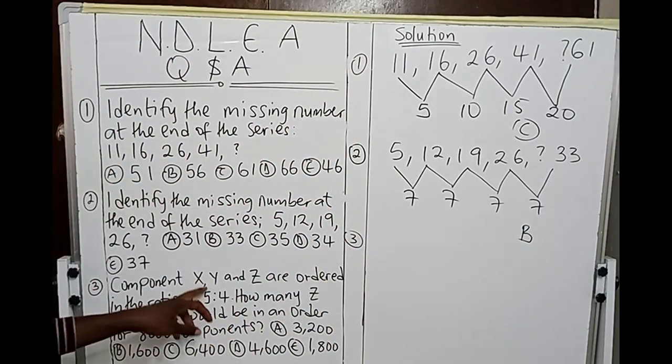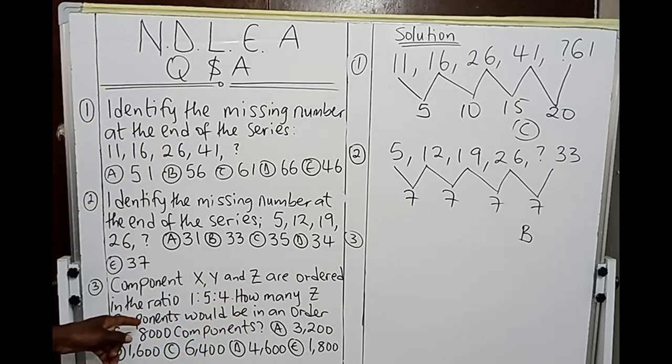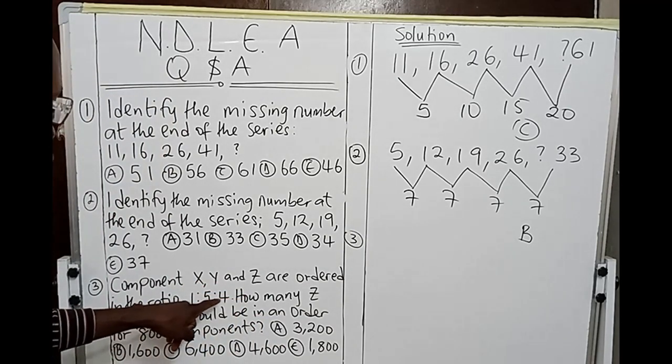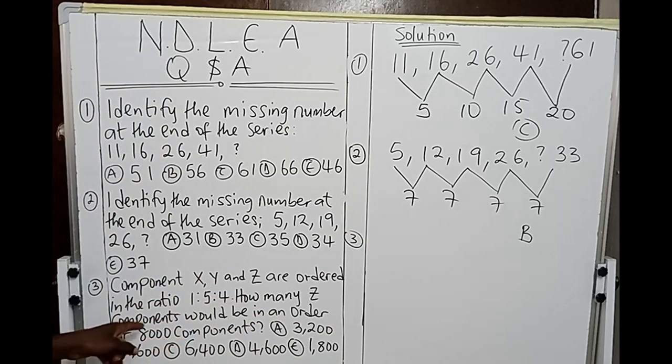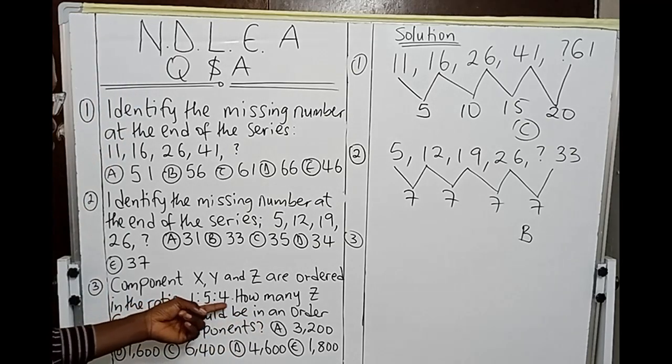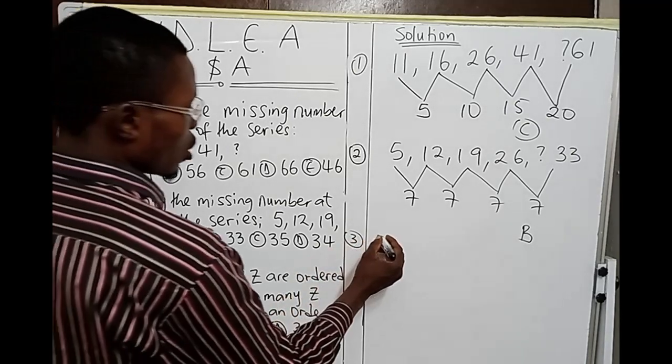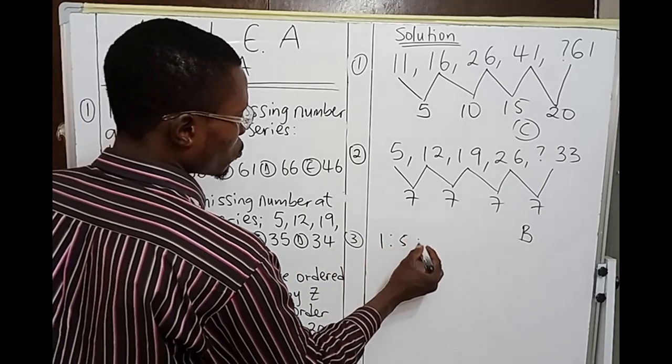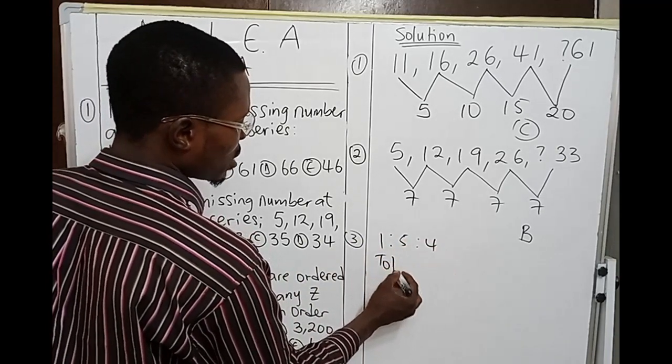Number three says: Component X, Y, and Z are ordered in the ratio 1:5:4. How many Z components would be in an order for 8000 components? Now if you want to get the X components, you need to get the total ratio. You have 1:5:4, so the total ratio is given to be 1 plus 5 is 6, 6 plus 4 is 10. Total ratio is 10.